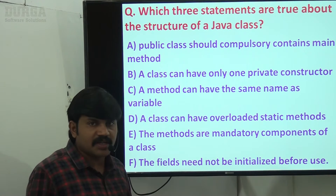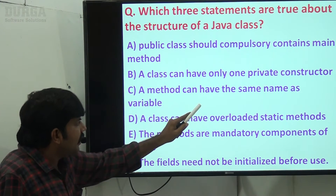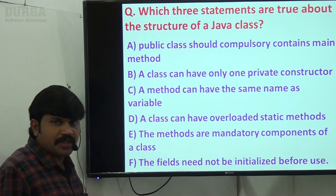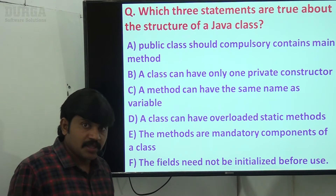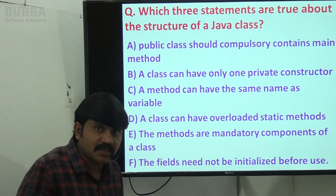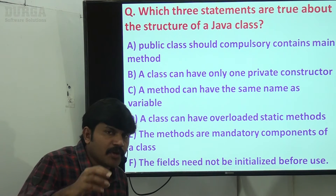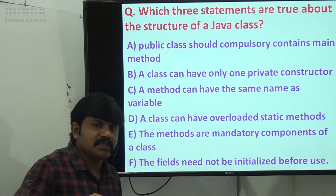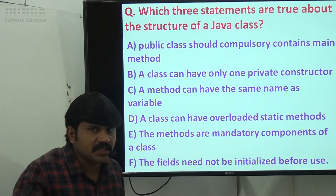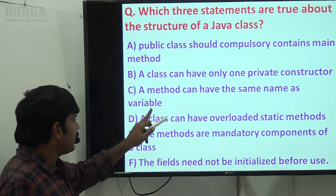Third statement: a method can have the same name as a variable — correct. A variable and a method can have the same name. If you are calling it like a method, the method will be invoked; if you are using it like a variable, the variable will be referenced. Yes, this is a valid statement.